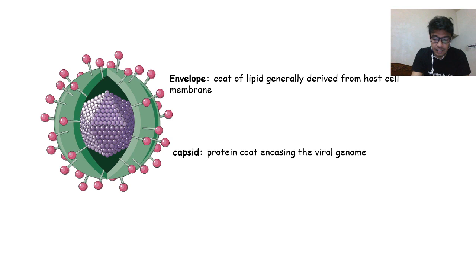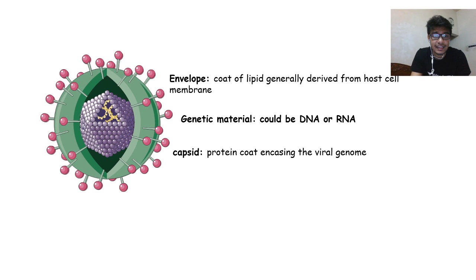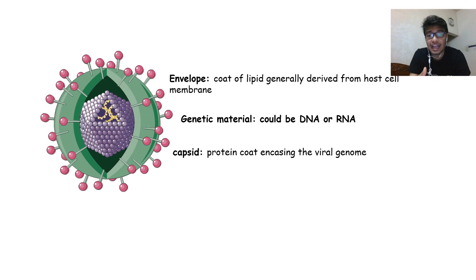After the capsid you have the genetic material. An interesting fact about viruses is they can use both DNA and RNA as genetic material. In contrast, other organisms in the animal kingdom only use DNA as the blueprint — RNA is produced as a transcript but the blueprint is the DNA. Viruses, however, can have both RNA and DNA as their genetic material.